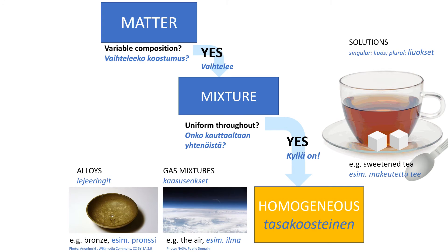A homogeneous mixture — homogeeninen seos — is a mixture in which the composition is uniform throughout the mixture. As long as each substance is mixed in enough to be indistinguishable from the others, it is a homogeneous mixture. The common type of homogeneous mixture is a solution — liuos — which is one substance dissolved completely within another. Sweetened tea is a good example of a homogeneous mixture, one with the same composition throughout.